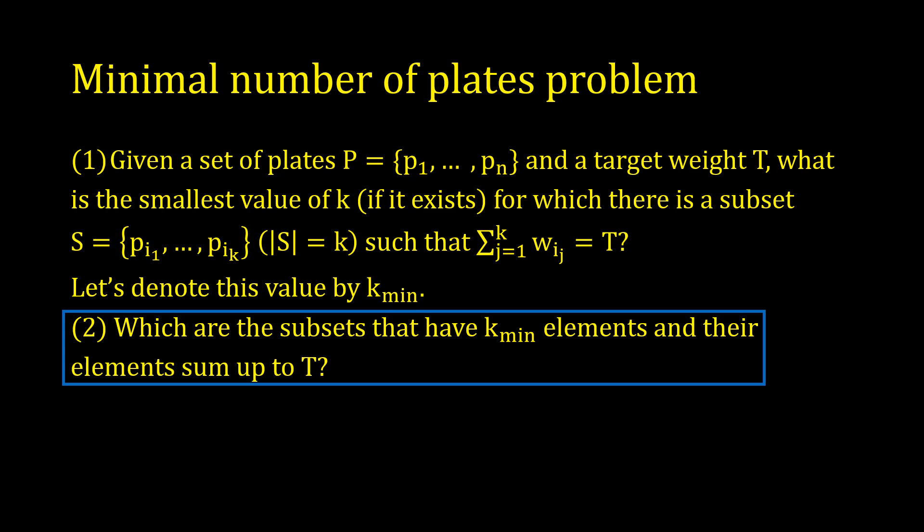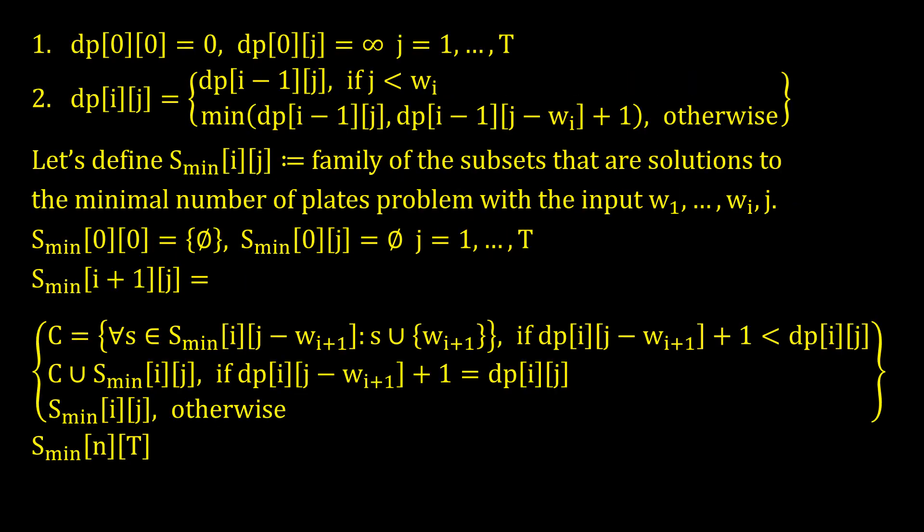Let's solve the second part of our problem. For that, we once again fill out a DP table, but this time with the family of the subsets that are solutions to the corresponding subproblem. We initialize by the family of empty set for S_min[0,0], and by empty family for S_min[0,j].